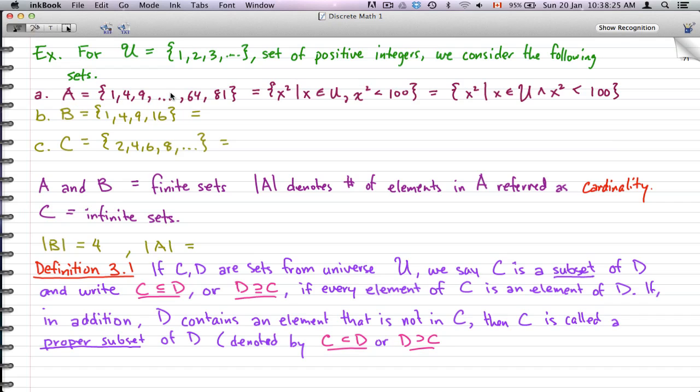Set A = {1, 4, 9, ..., 64, 81}. We could tell immediately that the notation used for this is {x² | x ∈ U, x² < 100}. Or, you could also call it {x² | x ∈ U and x² < 100}. So you could use a comma or an 'and' to represent the limitation that we have here. I prefer to use the comma, but you can use whatever you want.